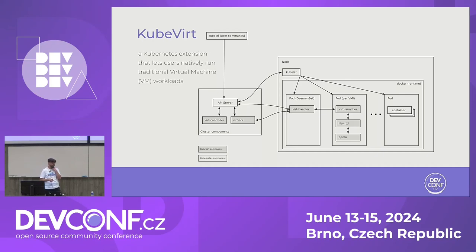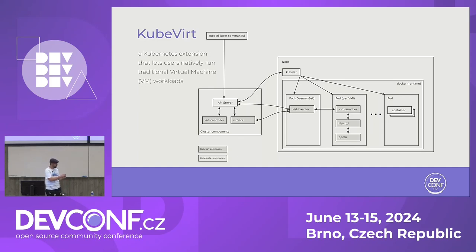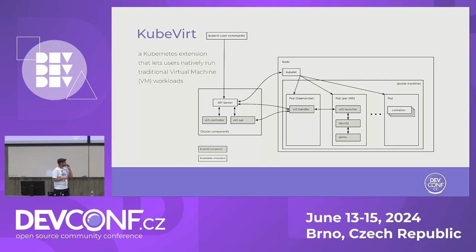KubeVirt is an extension of Kubernetes. It basically allows you to run VMs as a workload as well. The same way you could say I want to run this application as a pod, you now have a similar way to say I want a VM running together with a pod. It's an extension — you don't actually change Kubernetes, you just improve and extend it. So you still have application workloads running in the node, but thanks to KubeVirt, now you can have a pod with KVM — that's the hypervisor we use.